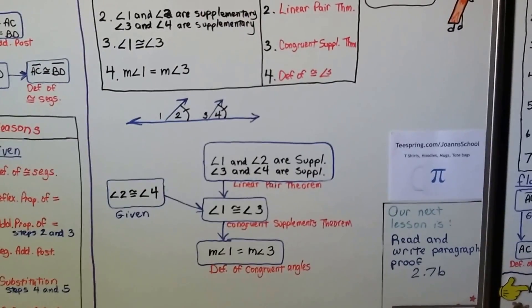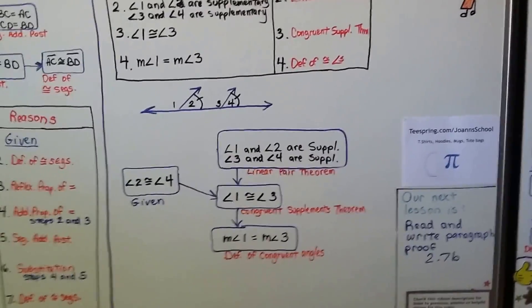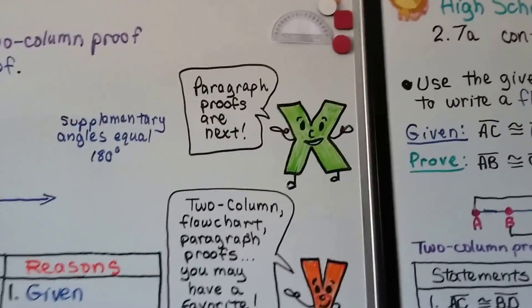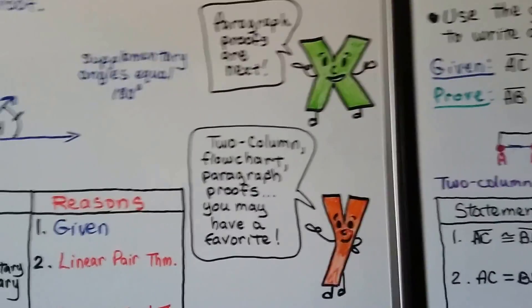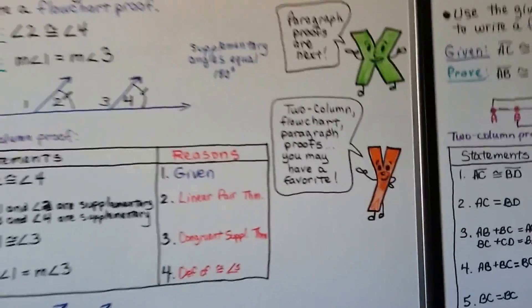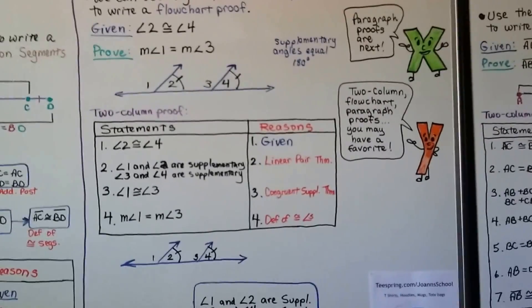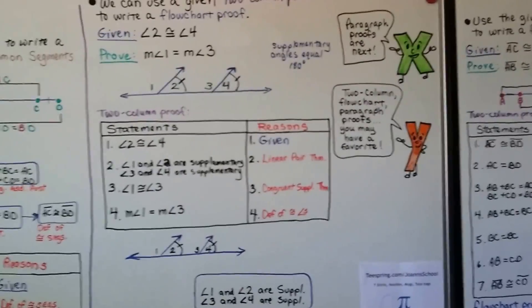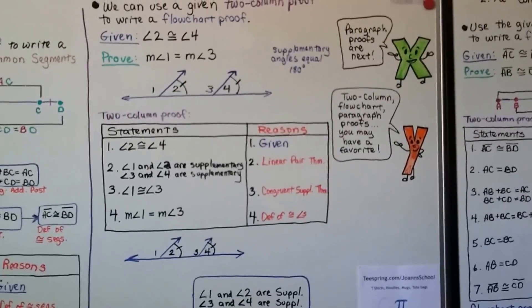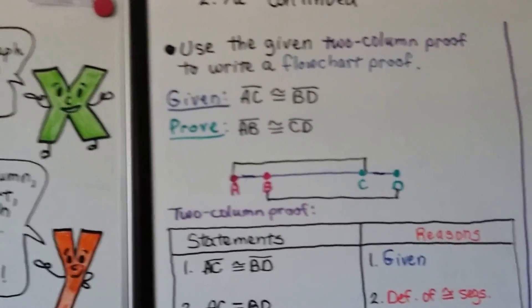That brings us to: the measure of angle 1 equals the measure of angle 3. If they're congruent, they're equal — that's the definition of congruent angles. So we've got four statements and four reasons. We know angle 2 is congruent to angle 4, and 3 and 4 are supplementary, and 1 and 2 are supplementary. We take our two-column proof and turn it into a flowchart proof, listing the given and using arrows to connect related steps.